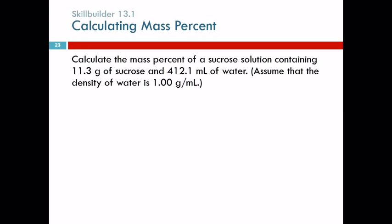Let's calculate the mass percent of a sucrose solution containing 11.3 grams of sucrose and 412.1 milliliters of water. It's assumed that the density of water is one gram per milliliter. This is one of those questions.